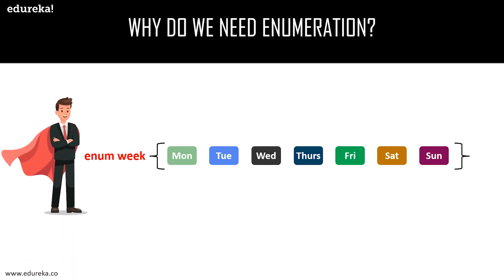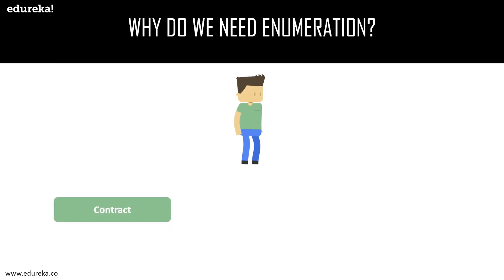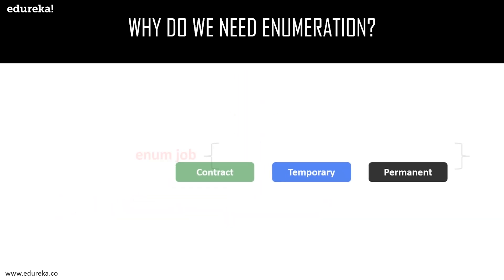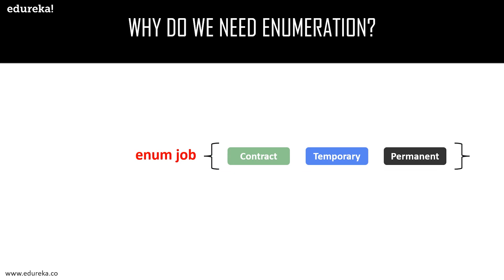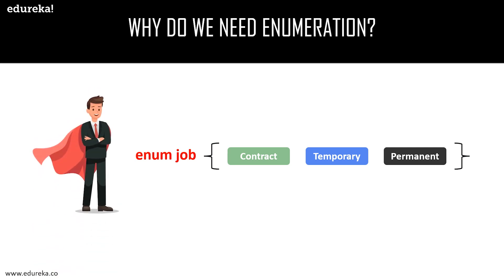Similarly, consider another example where you are the boss providing employment for different employees: contract, temporary, and permanent. If you had to code a program for appointing employees on the basis of contract, temporary, and permanent, you might look for code that is simple, small, and efficient. In this case, if you use enum and store all three values into one single variable called job, your code will be short, simple, and efficient.